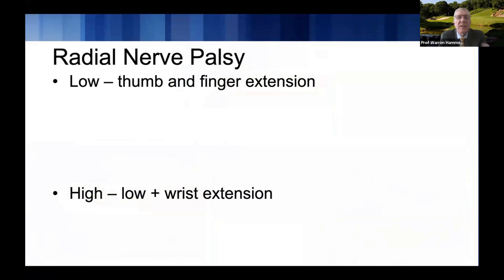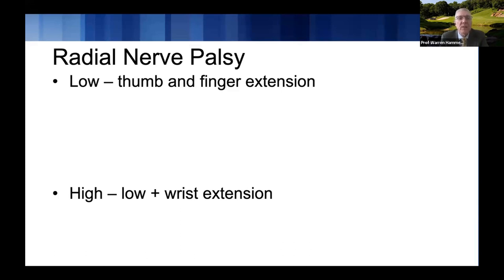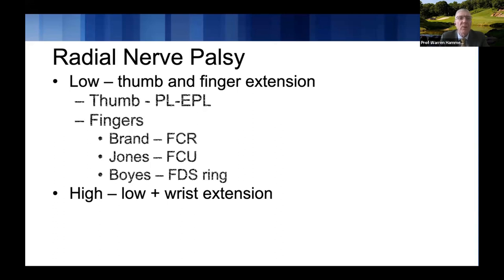For radial nerve palsy: if you have a low radial nerve palsy, meaning distal to the takeoff of the wrist extensors, you've lost thumb and finger extension but still have some wrist extension with radial deviation, since ECRL innervation comes off before ECRB. If you can extend the wrist even radially deviated, you only need to worry about finger and thumb extension. If you can't extend the wrist, then you must also restore wrist extension. Radial nerve palsies are fairly common, and these transfers are predictable with consistent good results.